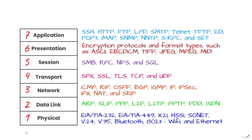At the physical layer, one might find physical resources such as network hubs, cabling, repeaters, network adapters, or modems.